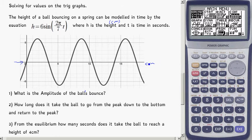You can also look to see that zero, the axis, the x-axis there, is actually quite symmetrical about top and bottom. So our amplitude is literally going from the midline up to the top. And we can see that on the graph is actually a 6. You can also see that from the equation. So the amplitude of the ball's bounce is 6 centimeters.